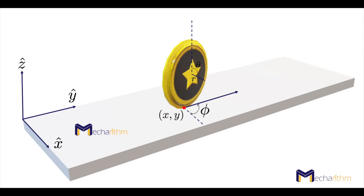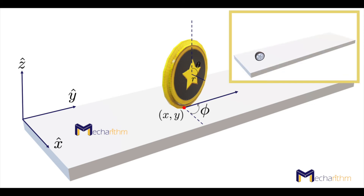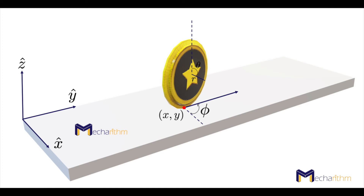Another classical problem is an upright coin rolling on a plane without slipping. Consider a coin with radius r rolling on a plane without slipping. This coin can be subject to both holonomic and non-holonomic constraints. Holonomic constraints reduce the C-space dimension and degrees of freedom: the disk is confined to the X-Y plane and cannot move in the Z direction, and rotating the disk around Y would cause it to lose its upright position. So the disk has two holonomic constraints.